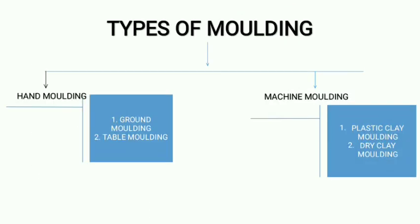Next are the different types of moulding. We can do moulding manually or by use of a machine. In hand moulding, we can do it by the ground moulding method or the table moulding method. In machine moulding, there is plastic clay moulding and dry clay moulding.